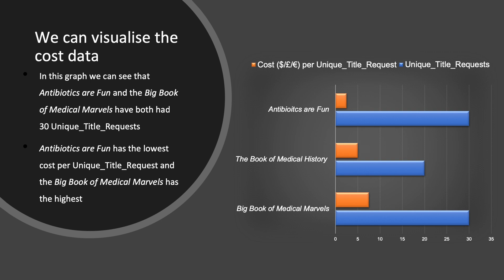We can visualise the cost data in several ways. In this example, the graph shows that Antibiotics of Fun and The Big Book of Medical Marvels have both had 30 Unique Title Requests, but the cost per Unique Title Request is lower for Antibiotics of Fun. Antibiotics of Fun had the lowest cost per Unique Title Request, and The Big Book of Medical Marvels had the highest.